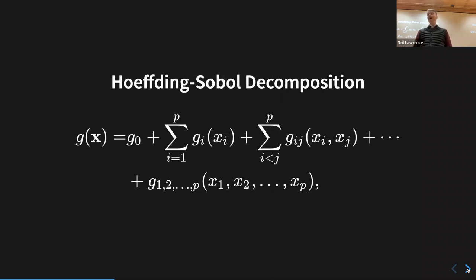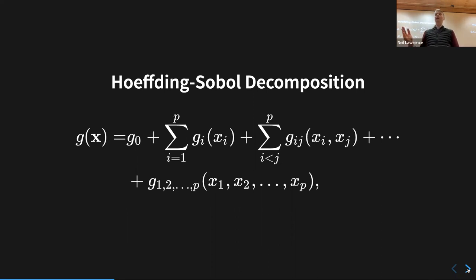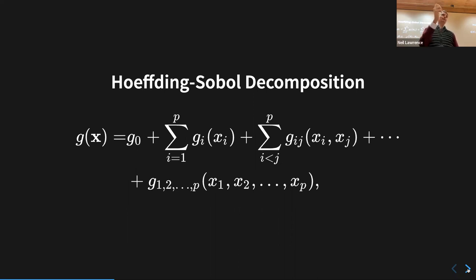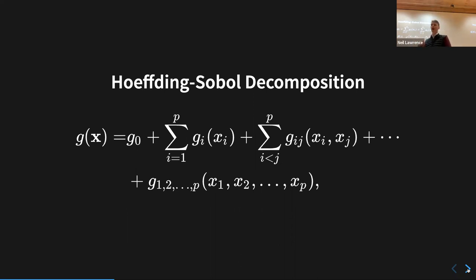The main thing we're going to make use of is what's called the Hoeffding-Sobol decomposition. What it does is take our simulation and say we can decompose it into components: some g₀, which we can think of as a mean, plus contributions from each individual input xᵢ.